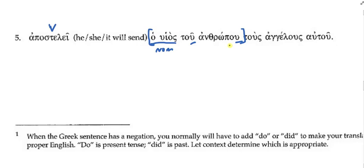If 'tou anthropou' goes with 'ho huios' as the head and genitive noun, I need to bracket these together so they function as a unit. How would I translate this? 'The son of man.' So it would be 'the son of man will send.' That whole thing functions as the subject of the verb. Then I have 'tous angelous' — notice how your article helps you see accusative plural here. That would seem to be functioning as the direct object, because accusative nouns are usually direct objects.